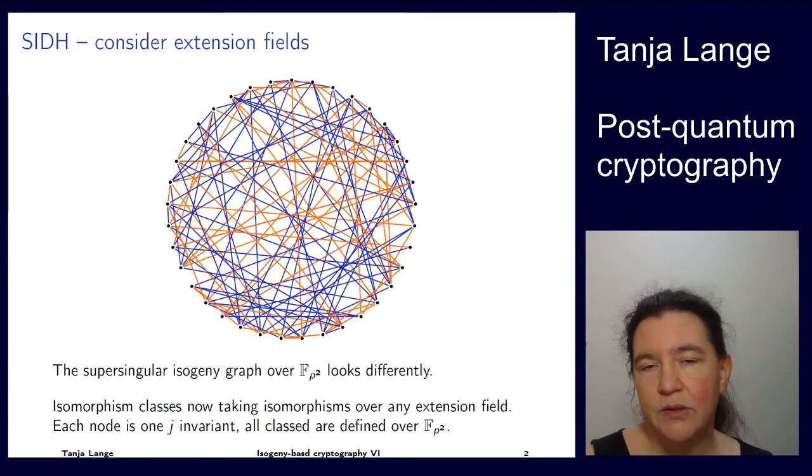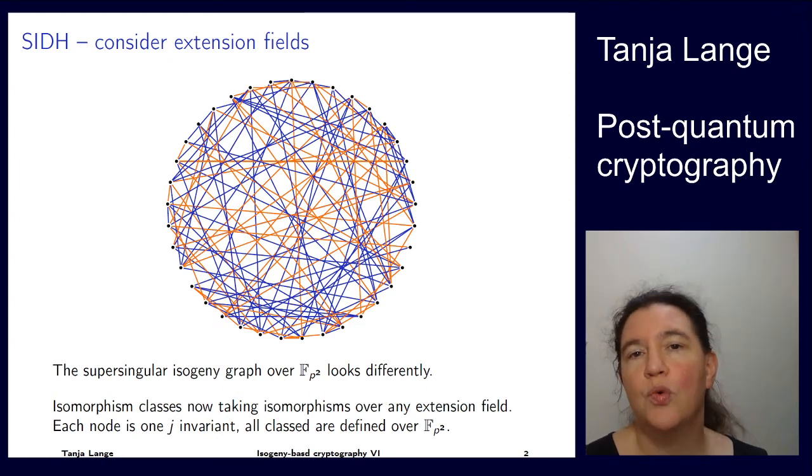So for the C-SIDH graph, we were looking at isomorphisms over fp, and so for instance the elliptic curve and its twist were two different points, whereas here the elliptic curve and its twist, its quadratic twist, would be identified.